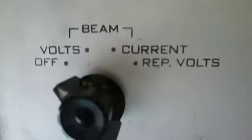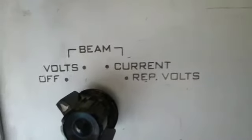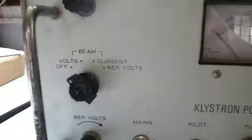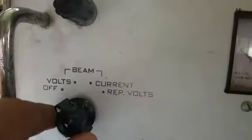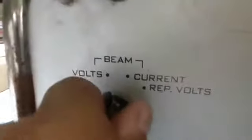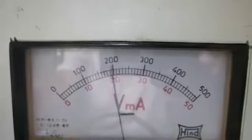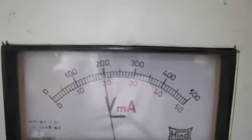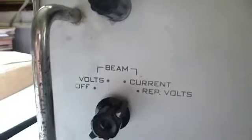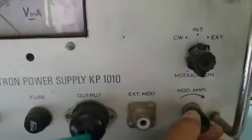To select the reading we have the selector knob. Using the selector knob you can switch from the off position to beam voltage, then beam current, and then repeller voltage. Switch from off to the beam voltage position so that the voltage will increase to around 200 volts. After that, put it in the current mode and check the current — it should always be less than 20 milliamps. Make sure it is less than 20 milliamps; otherwise reduce the voltage. Then switch it to the repeller voltage, and vary the modulation amplitude to get a square waveform on the CRO.